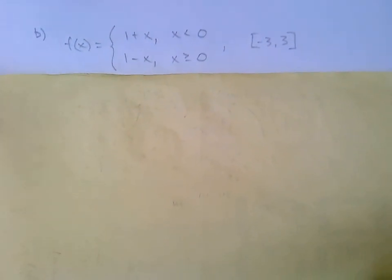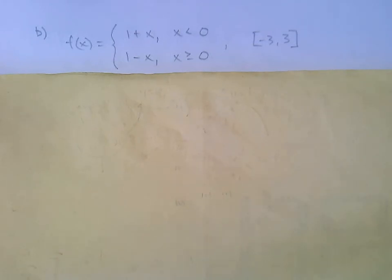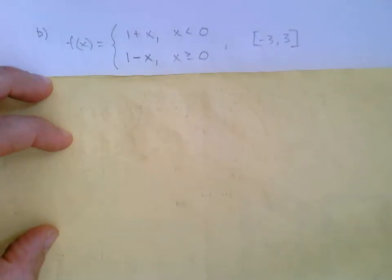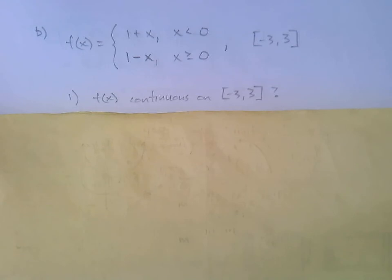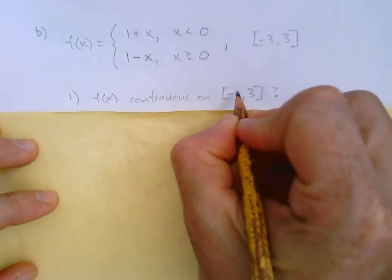Let's look at one more example. Part B. We've got f(x). It's a piecewise 1 + x when x is less than 0, and 1 - x when x is greater than or equal to 0. And the interval is from -3 to 3. Okay. Well, we're just going to, same kind of problem. We're going to look at the three hypotheses. Starting with number 1. Is f(x) continuous on that interval from -3 to 3?